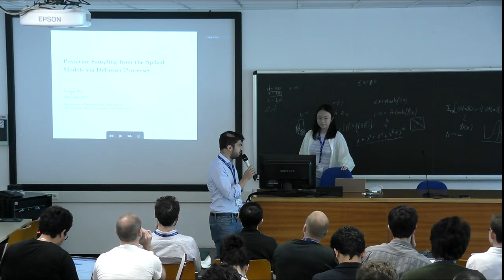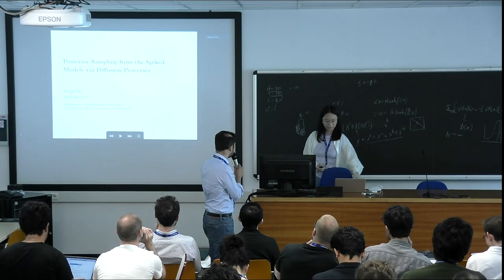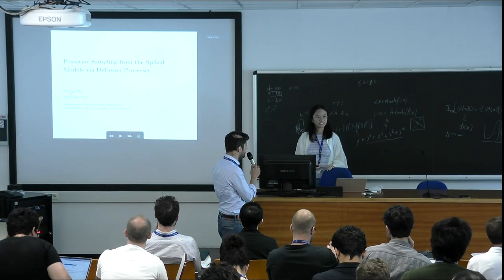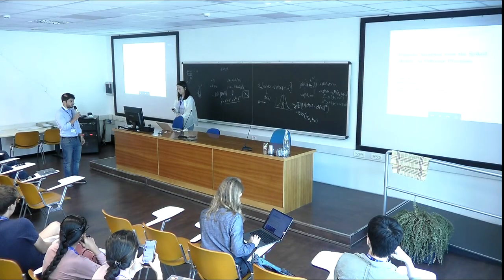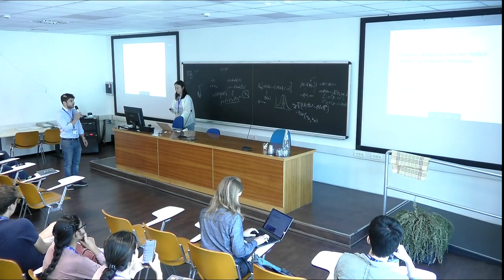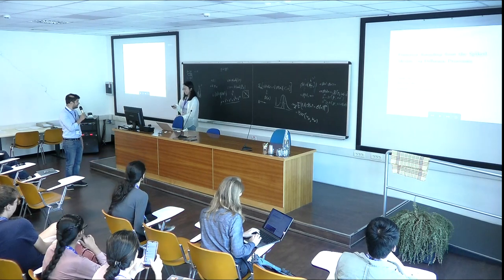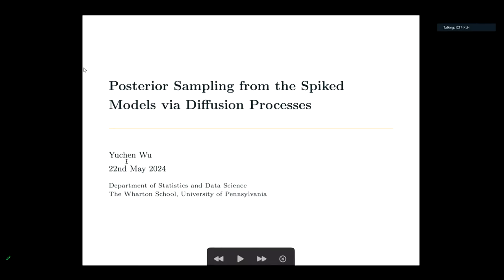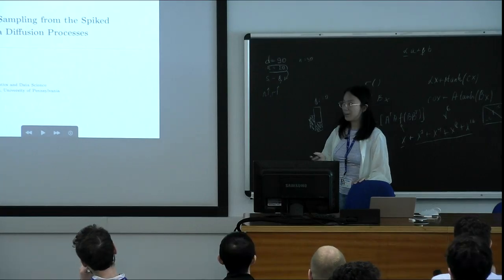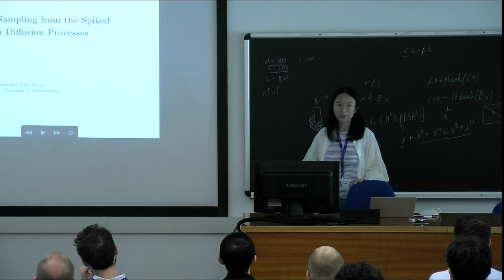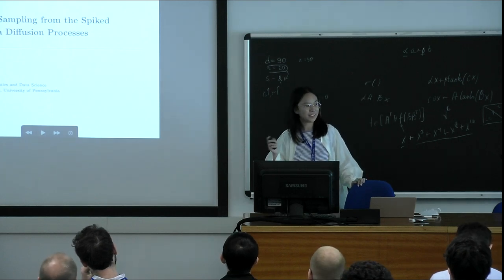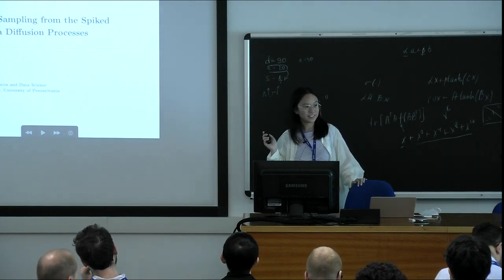We're going to focus on diffusion modeling in this session. Our first speaker is Yuchen Wu, who joins us from Morton at UPenn and she's going to talk about posterior sampling via spike models. Today I'm going to talk about my work on using diffusion models to draw samples from the posterior distribution of the spike models.